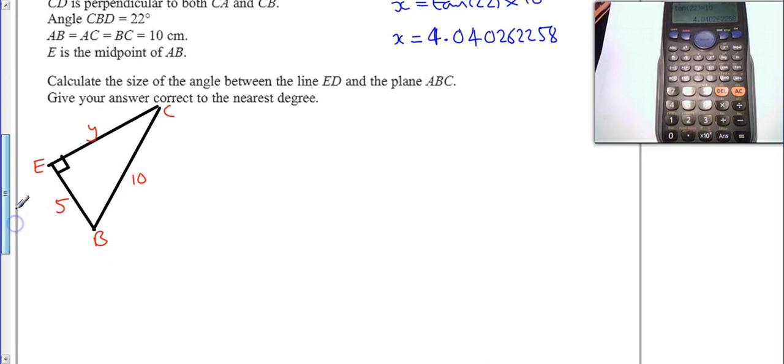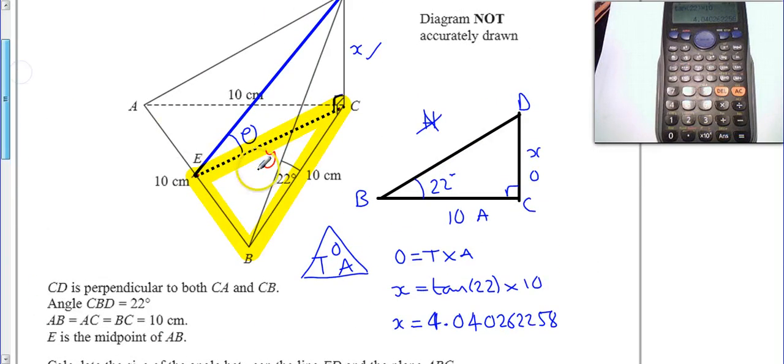So I'm going to use a bit of Pythagoras here. So I know that Y squared is going to be 10 squared minus 5 squared. So Y squared is going to be 75, or Y is equal to the square root of 75, which is equal to 8.660254038. So I've now worked out what the Y is.